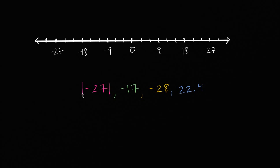So let's first think about the absolute value of negative 27. What is the absolute value of negative 27? Well, it's just going to be positive 27. This right over here is the same thing as positive 27, because negative 27 is 27 to the left of zero. So let's plot the absolute value of negative 27 — it's really 27, so it's going to be right over here. That is the absolute value of negative 27. It is positive 27.